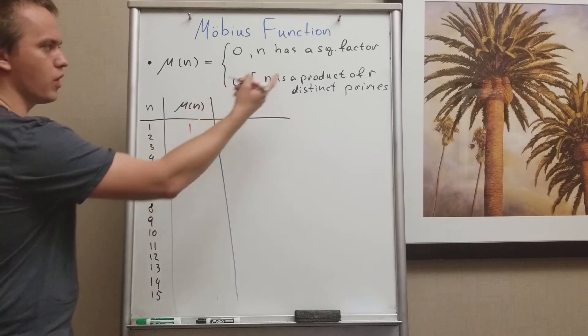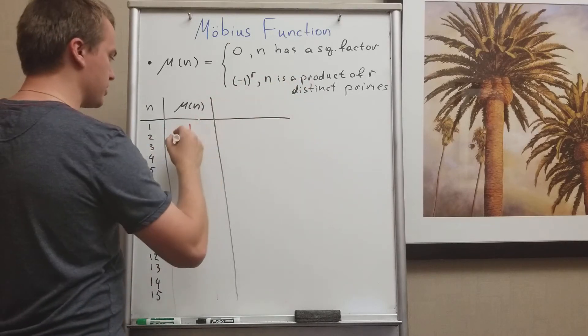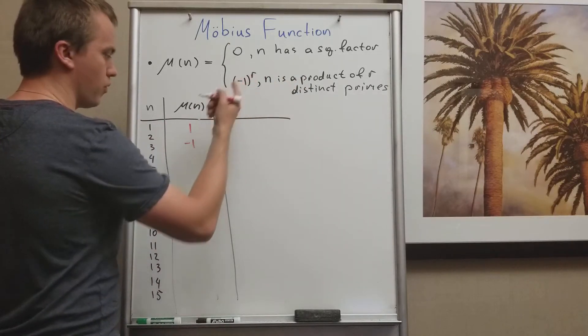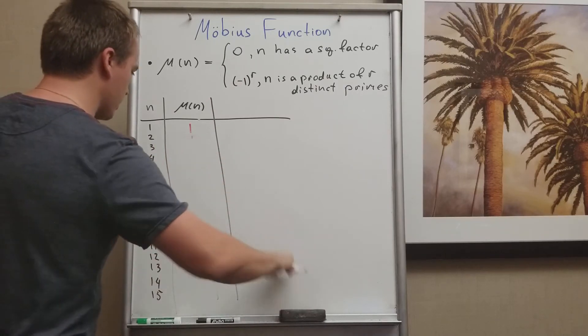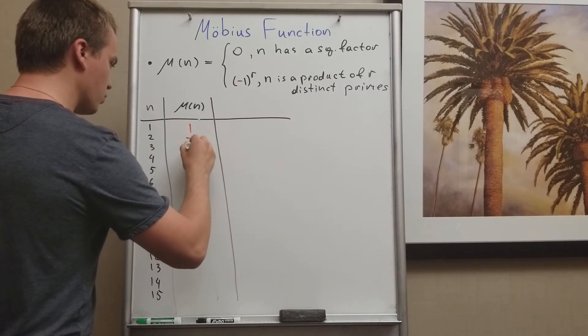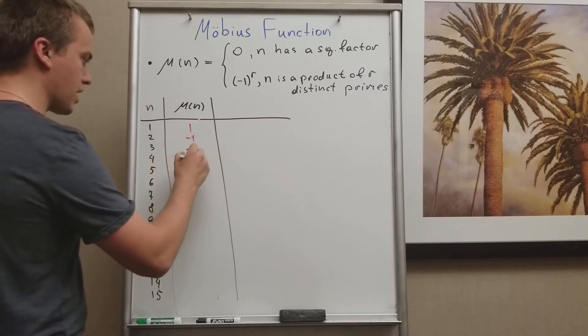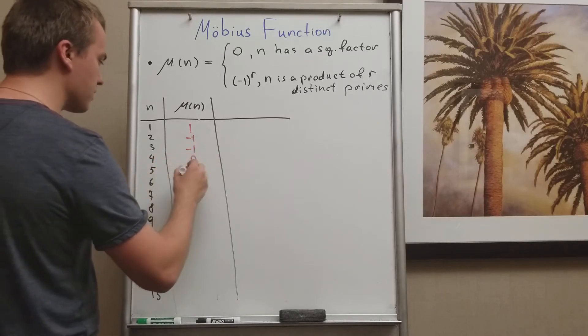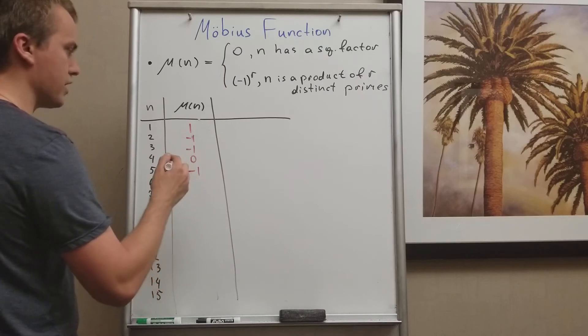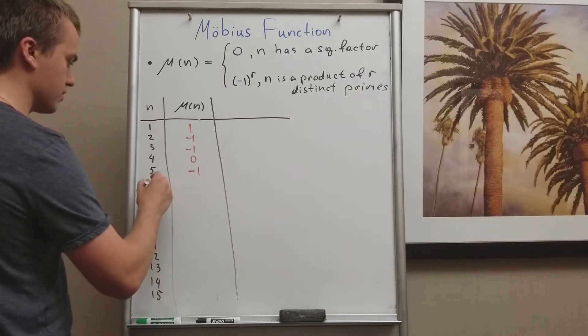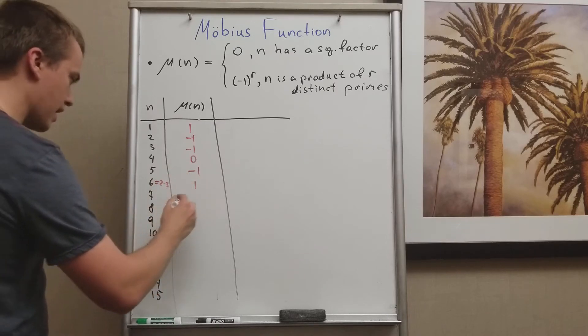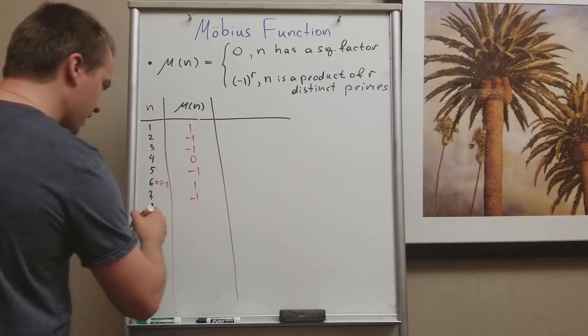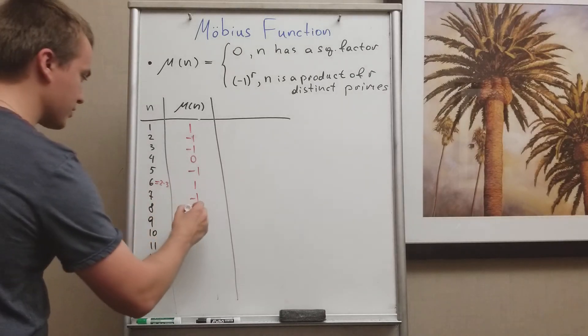But what I found is all mathematicians agree that μ(1) equals 1. Okay, what is μ(2)? 2 is one distinct prime number, so it's going to be just (-1)¹, so negative 1. The same thing: μ(3) is negative 1. For μ(4) we'll get zero because it's a square factor. μ(5) is negative 1. μ(6) is going to be the product of two primes, 2 and 3, so I will have 1.